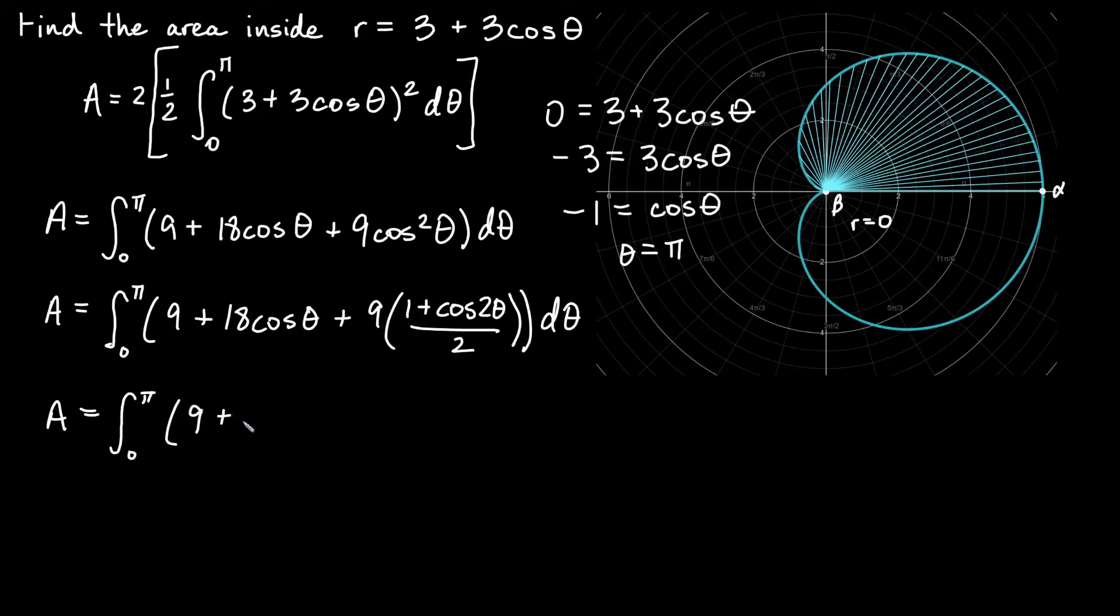I'm going to go ahead and leave it in here. So I will have 9 plus 18 cosine of theta. And then splitting this up, one half times 9, I would have nine halves, plus I would also have cosine 2 theta over 2 times 9. So that would be 9 halves cosine 2 theta.